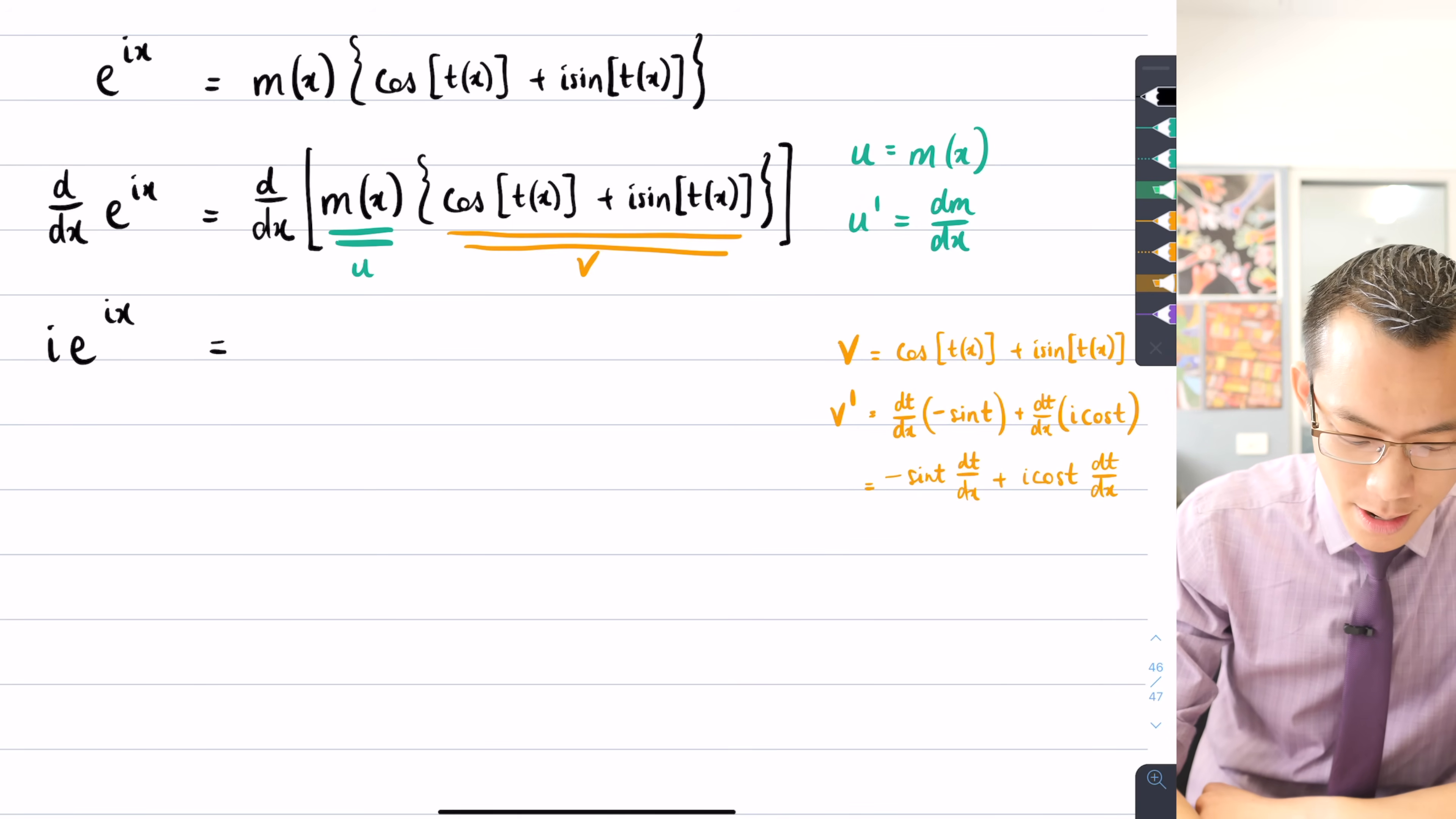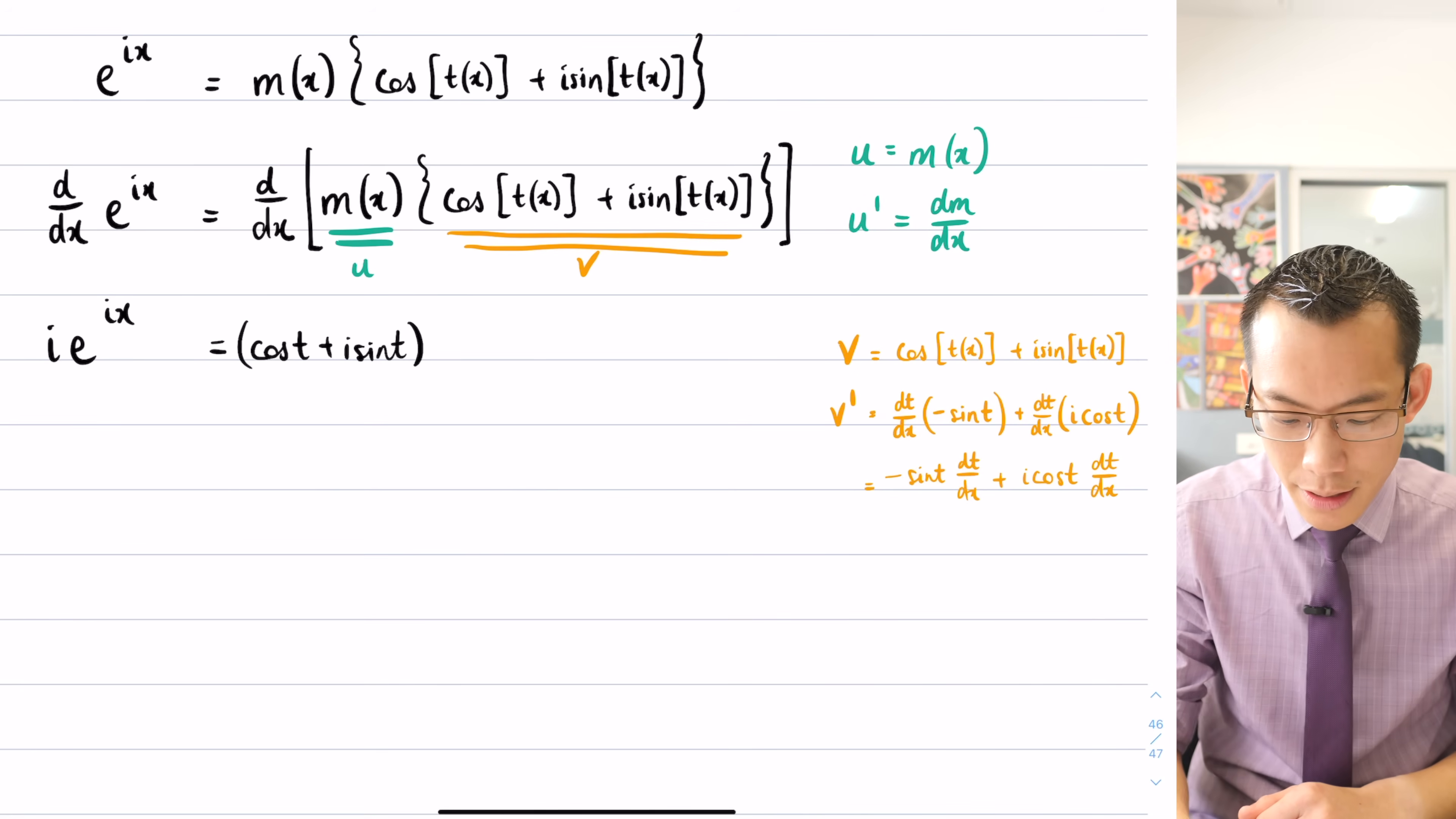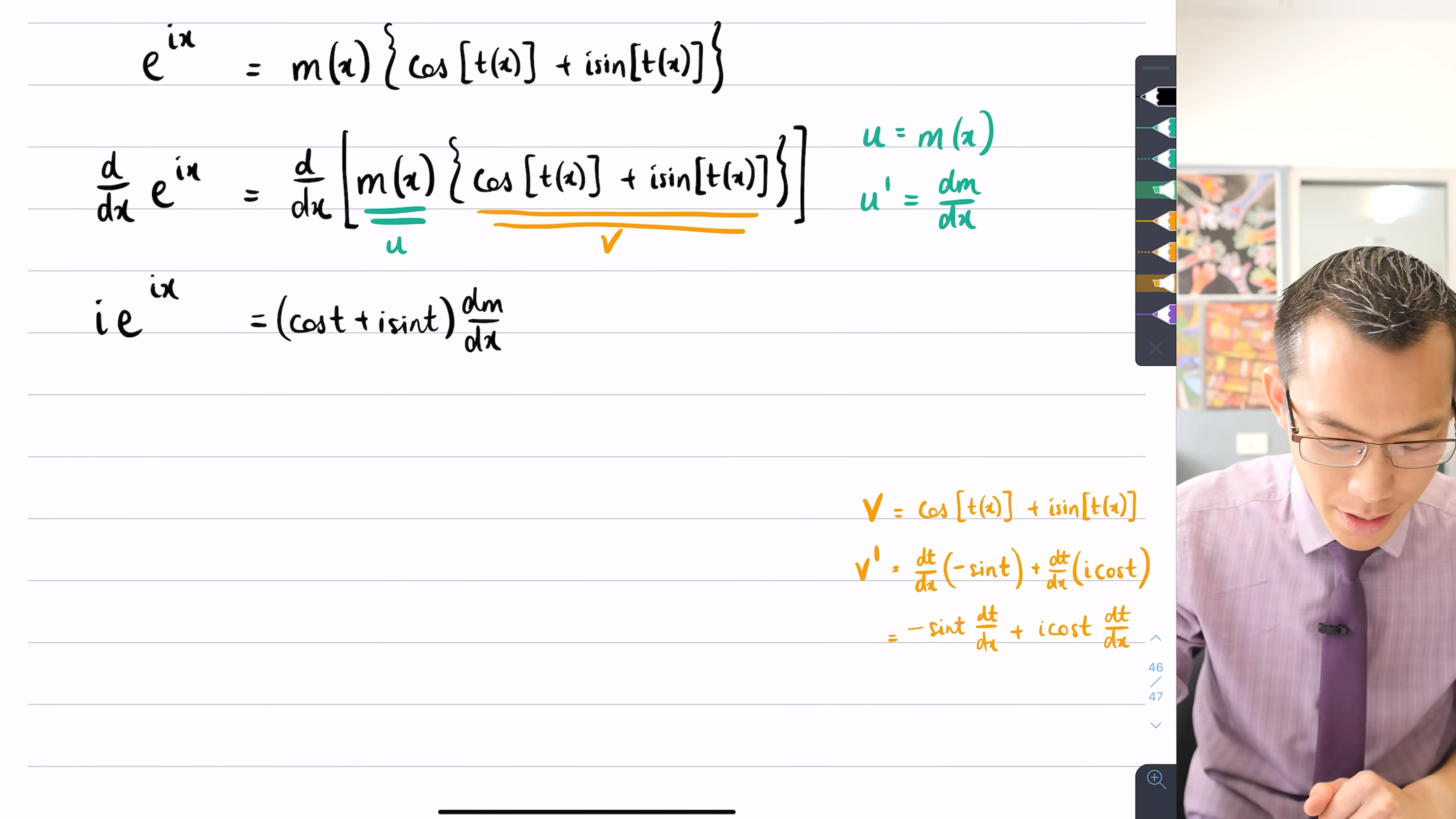v is just going to be cos of, I'm going to stop writing t of x like I did over here because I did it just to remind me it's a function when I'm differentiating. But I've done all my differentiating now, so it's going to be cos of t plus i sine of t. There's v. What's u'? Well, here's u' over here, so I'm going to write that as dm/dx. Take a breath. Plus, let's see. I think I'm drastically running out of space here, but I'll do my best. I'll write this on the—I'm going to move this down and I'm going to use that space a bit later on. So there's my v u', here comes u v'.